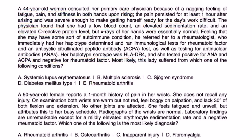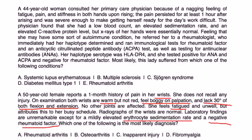Next question. A 50-year-old female reports a one-month history of pain in her wrists. She does not recall any injury. On exam, both wrists are warm, but not red, feel boggy on palpation, and lack 30% of both flexion and extension. No other joints are affected. She feels fatigued and unwell, but attributes this to her busy schedule. Radiographs of the wrists are normal. Lab findings are unremarkable, except for mildly elevated erythrocyte sedimentation rate, negative rheumatoid factor.